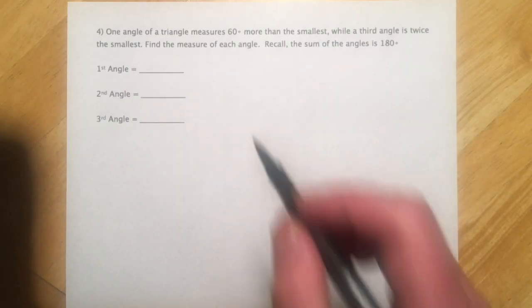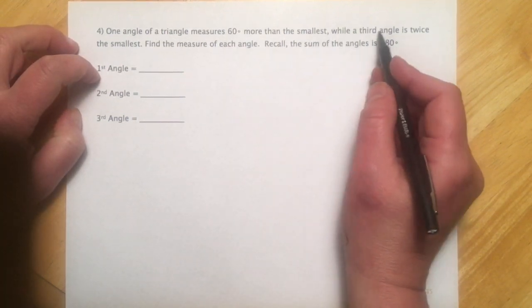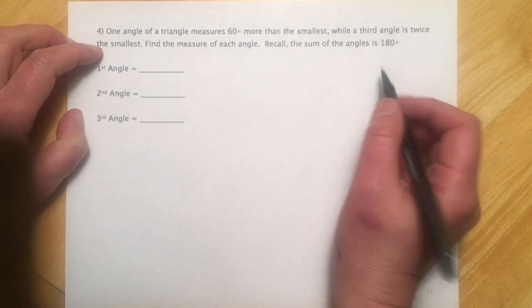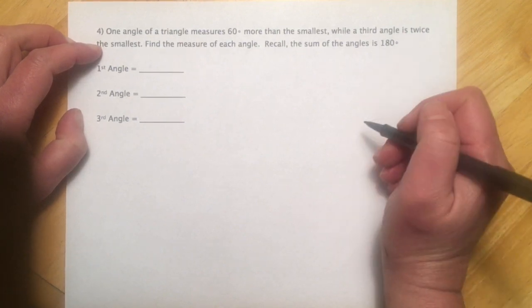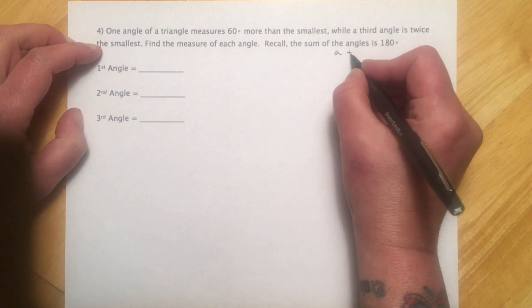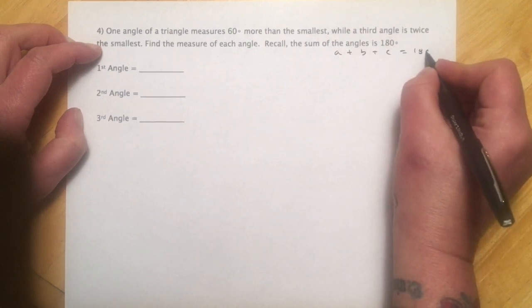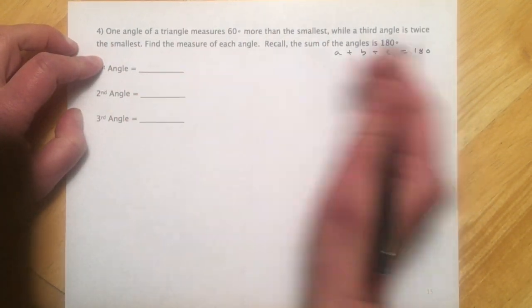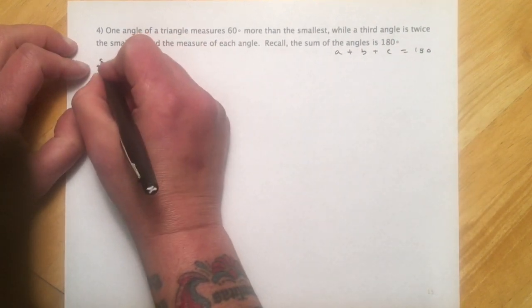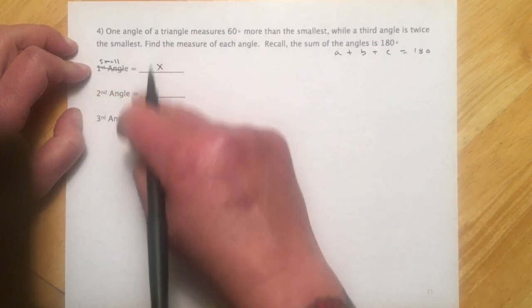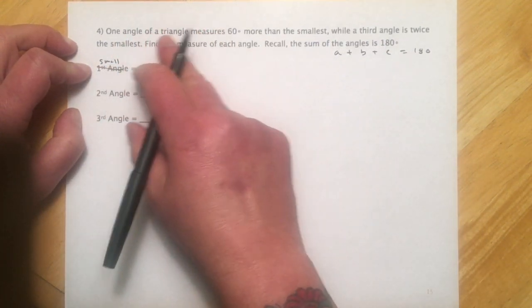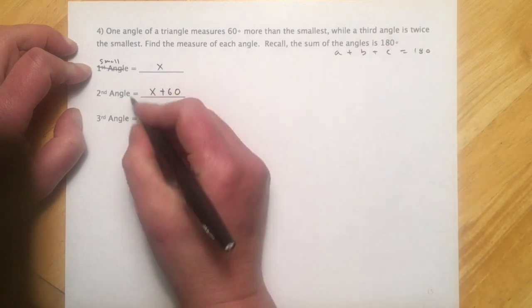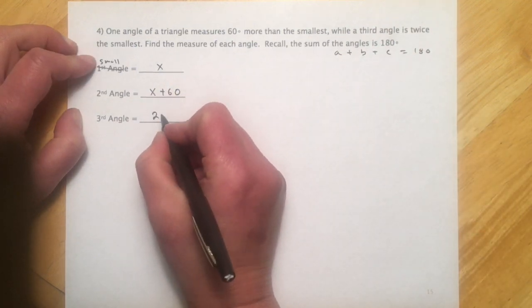Another triangle problem. One angle of a triangle measures 60 degrees more than the smallest, while the third angle is twice the smallest. Find the measure of each angle. Recall the sum of the angles is 180. So if you add up the interior angles, they're always going to add to 180. So we want to let the first one be the small one. I'll let that be my plain x, I'll write the other two in terms of it again. So one angle measures 60 more than the smallest, so that'll be x plus 60. And then the third is going to be 2x.